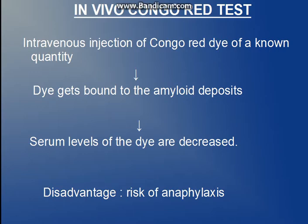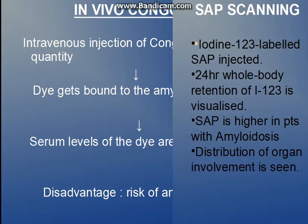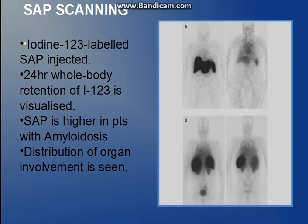The in vivo Congo red test is a test which was used earlier but is now obsolete. In this, an intravenous injection of a known quantity of Congo red dye was given to the patient. The dye binds to the amyloid deposits and the serum level of the dye decreases. It is not used now because it is non-specific and also has a risk of anaphylaxis.